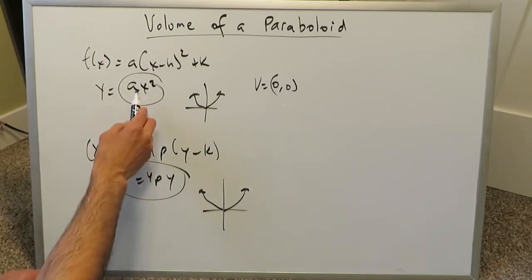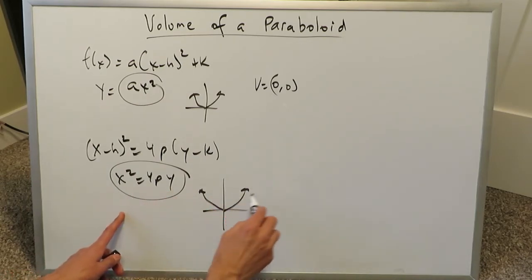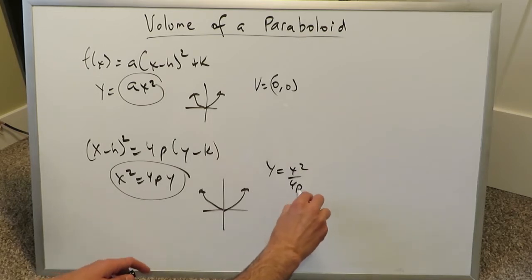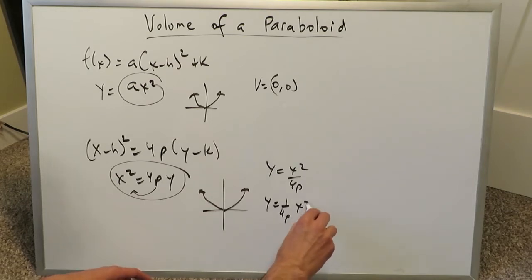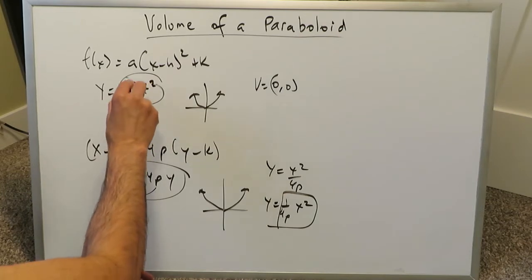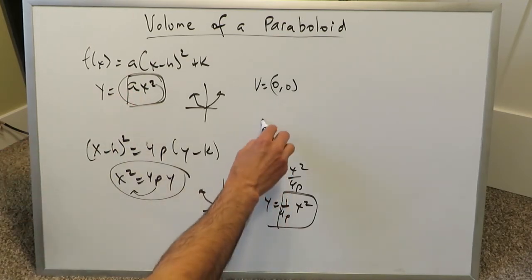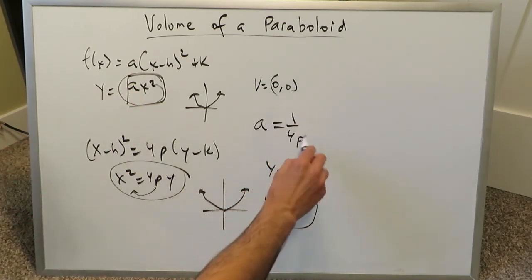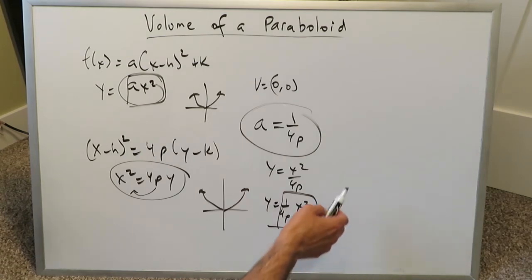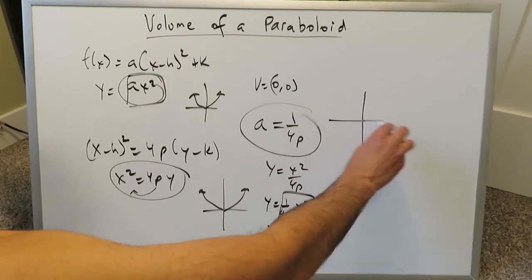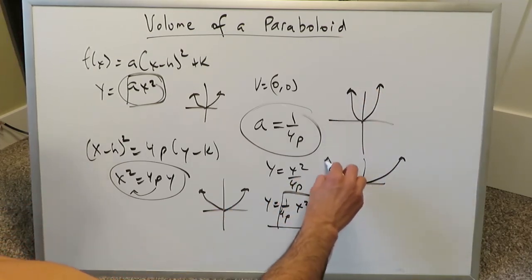This right here is y equals ax squared. If you look at the equation x squared equals 4py and solve for y, you get y equals x squared over 4p, which you can also write as y equals (1 over 4p) x squared. Now compare this with y equals ax squared. The only difference is you have an a and a 1 over 4p, so technically a must equal 1 over 4p. This factor 1 over 4p equals a is basically talking about the vertical stretch or vertical compression — whether a parabola is stretched vertically or is more of a flat parabola.